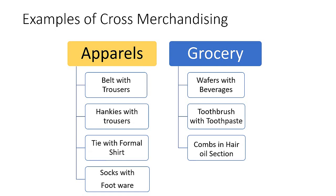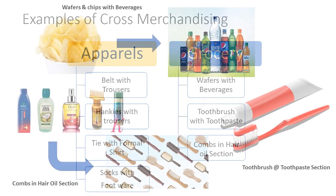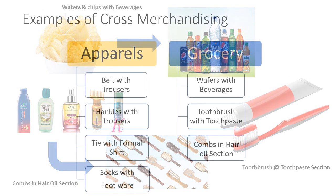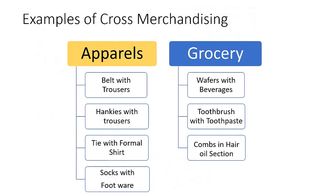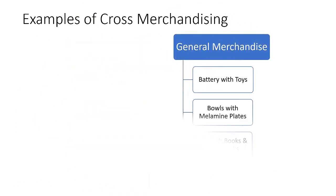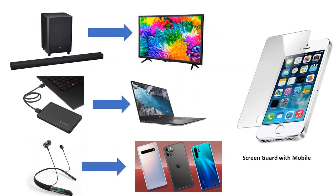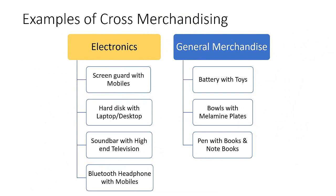In the FMCG category, we can place wafers and chips alongside beverages, toothbrushes beside the toothpaste section, and combs beside the hair oil section. In the electronics section, we can place screen guards with mobiles, hard disks and mice with laptops, wireless and Bluetooth headphones with mobile phones, and soundbars with high-end televisions.